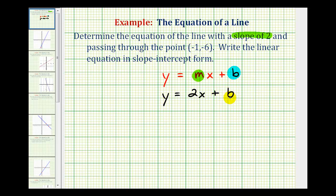And now we need to determine the y-intercept. Notice they also told us the line is passing through the point negative one, negative six. This does not mean that the y-intercept is negative six. And we should know this because this point is not on the y-axis.